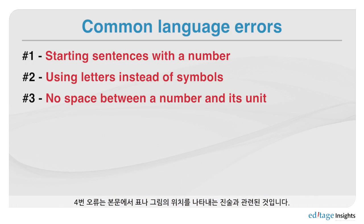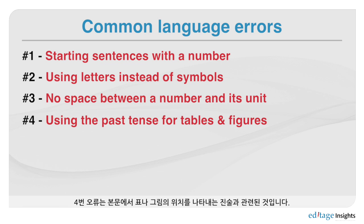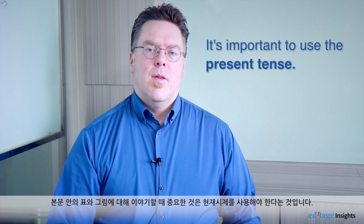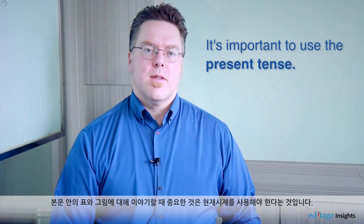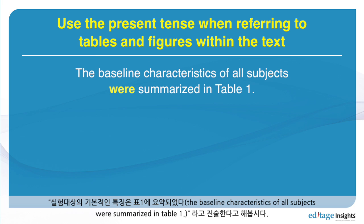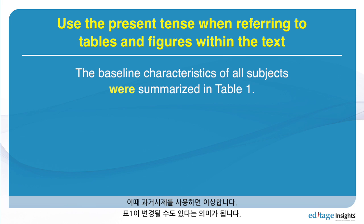Mistake number four deals with the use of location statements in the text. When giving statements, when talking about tables and figures in the text, it's important to use the present tense. If I were to say the baseline characteristics of all subjects were summarized in table one, using the past tense there would look strange — that would mean that table one is going to change.